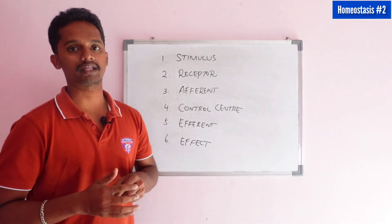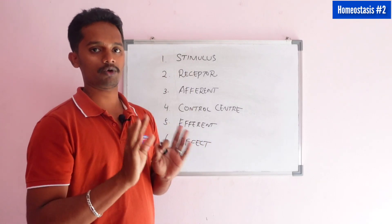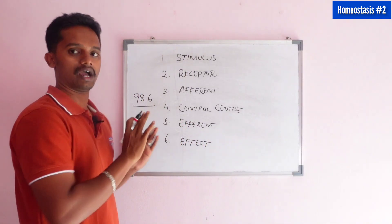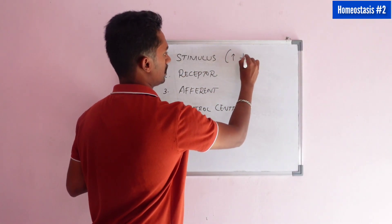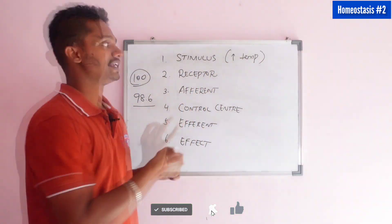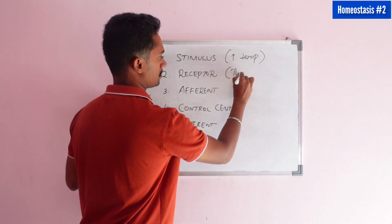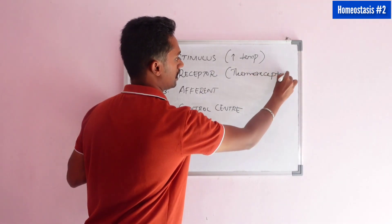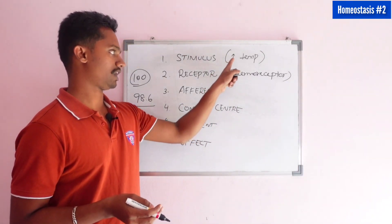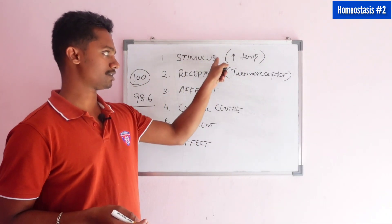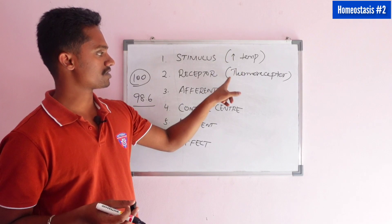Let's see the negative feedback mechanism with temperature. The normal average temperature is 98.6°F. In one case, if the temperature is at 100, that becomes the stimulus. We can identify this stimulus using a thermoreceptor. The thermoreceptor detects the temperature change. This receptor generates a response.